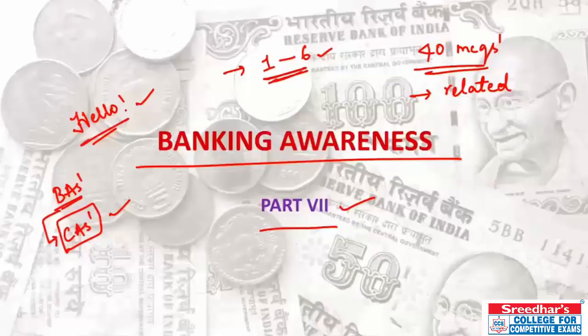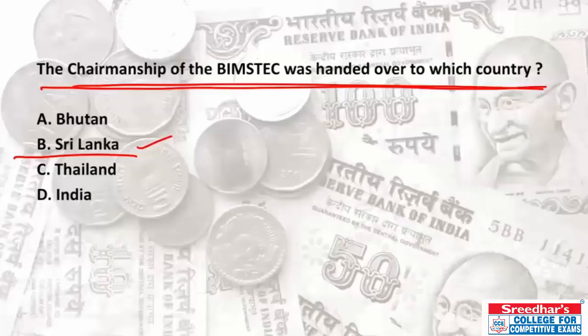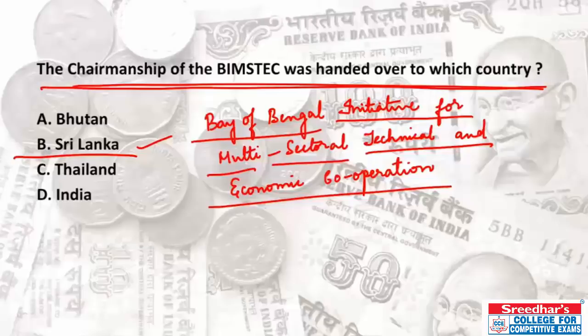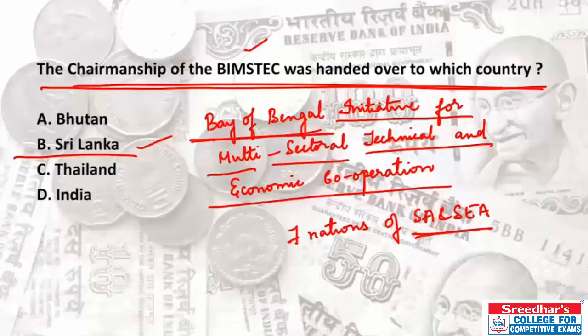The chairmanship of BIMSTEC was handed over to Sri Lanka. BIMSTEC stands for Bay of Bengal Initiative for Multi-Sectoral Technical and Economic Cooperation. BIMSTEC is an international organization comprising seven nations of South Asia and Southeast Asia — countries surrounding the Bay of Bengal.